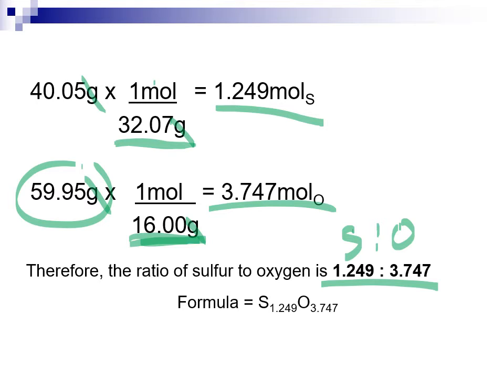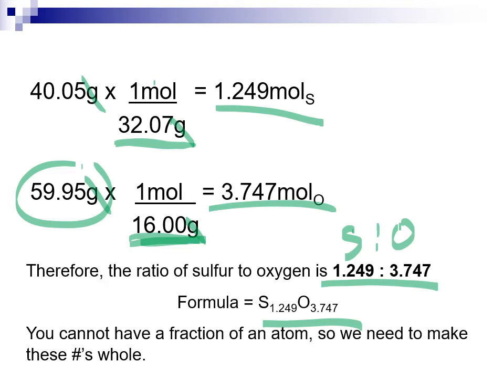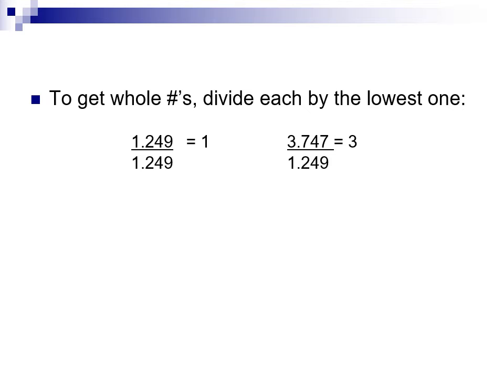That would make a strange formula — we don't write non-whole-number subscripts. When we go to write a formula, we want the subscripts to be whole numbers, because those numbers represent atoms as well as moles. We can't just round them because that would ruin our ratio; we have to maintain the ratio while getting to whole numbers. To do that, take the smallest mole value and divide all values by it. This maintains the ratio and gets us to the lowest whole number.